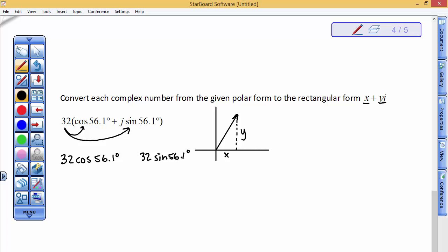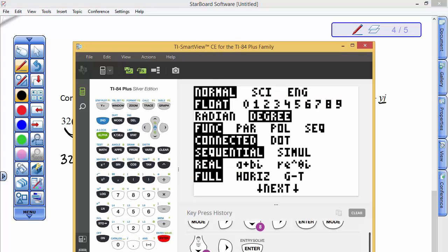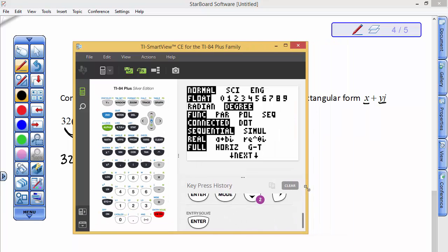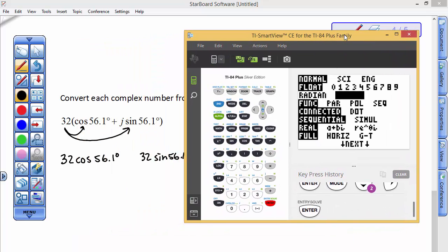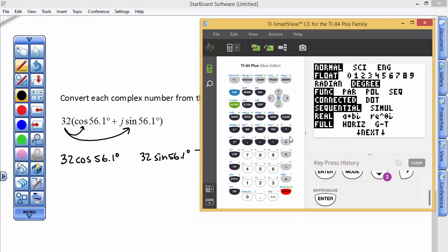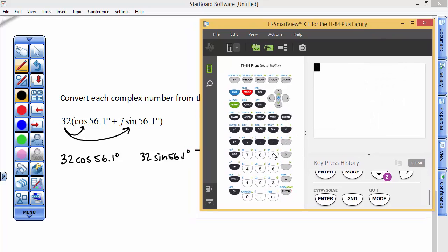So, let's see if I can get this smaller a little bit in the calculator. So I'm going to move it over here. So, the first one is 32 times the cosine of 56.1. So that's 17.8. Alright.